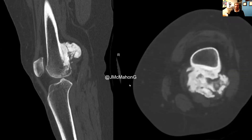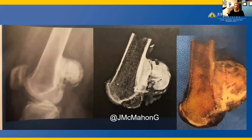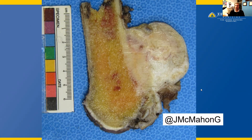Because of the concern for parosteal osteosarcoma, the specimen was resected. Here we have a preoperative radiograph image paired with the specimen radiograph and the gross specimen, showing this radio density and how it correlates with the gross photograph. A higher power view of the specimen shows this large tumor mass arising from the posterior cortex — this dense bone-forming tumor which is continuous with the posterior cortex.